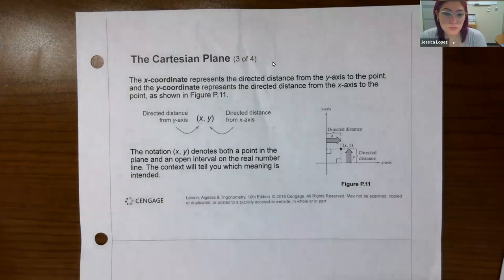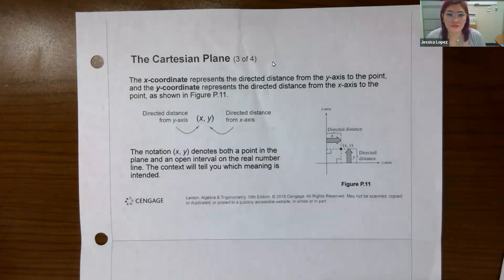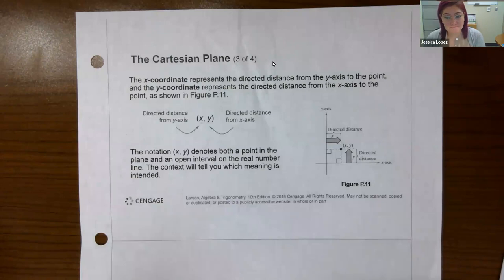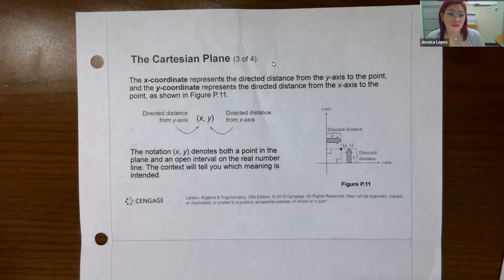The notation (x, y) can denote either a point in the number plane or an open interval on the real number line. The context will tell you which meaning is intended. When we use parentheses with two values and a comma in between, it could mean a point or it could mean an open interval. You really have to pay attention to what the problem is about. Normally, when they ask for domain and range or solutions to inequalities, they're talking about intervals. But when you're graphing, parentheses with a comma in between represents a point.